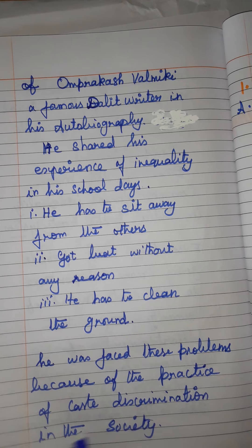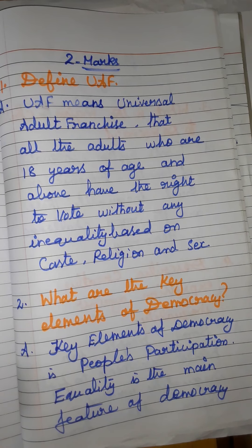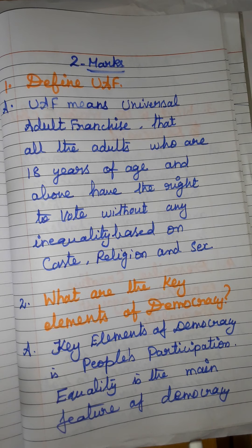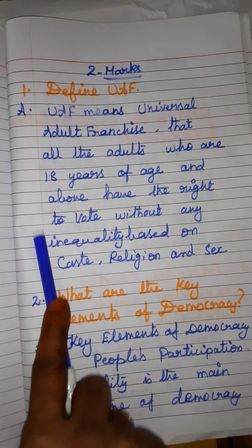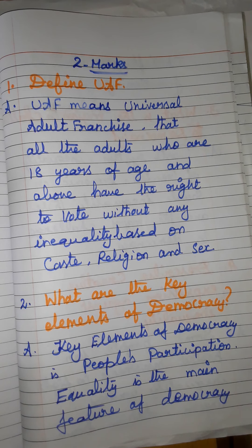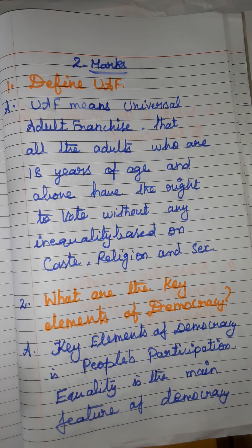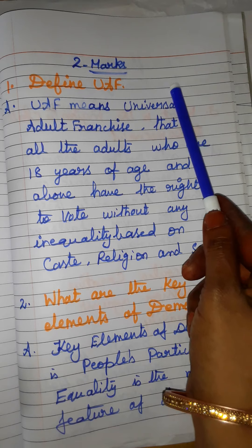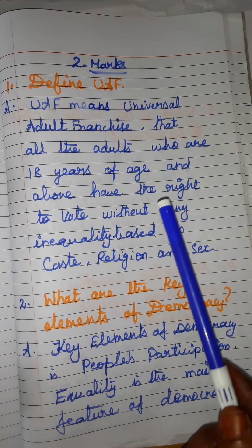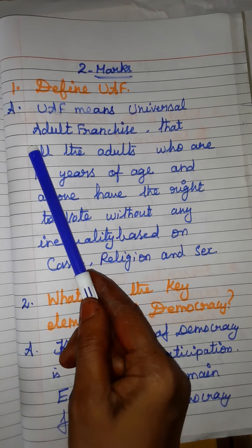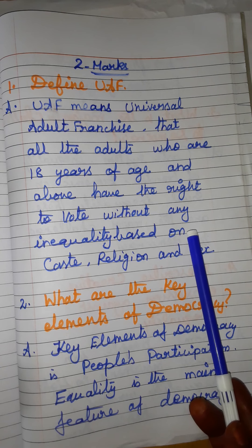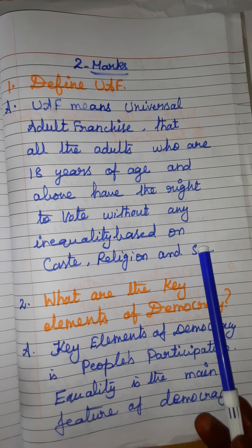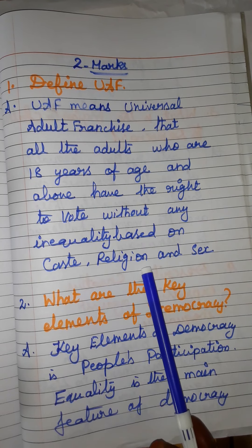He was forced to face these problems because of the practice of caste discrimination. Now, shall we see the two-marks part? Define UAF: UAF means Universal Adult Franchise — all adults who are 18 years of age and above have the right to vote without any inequality based on caste, religion, and sex.